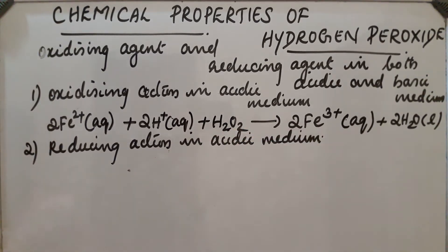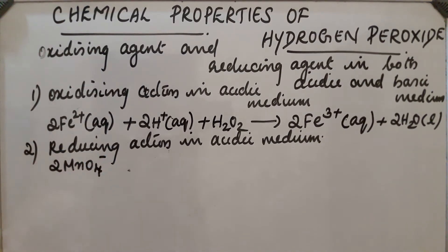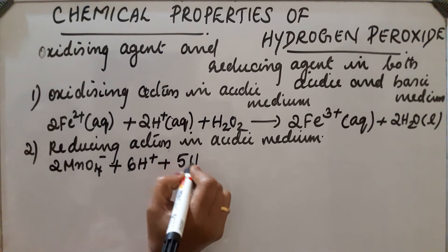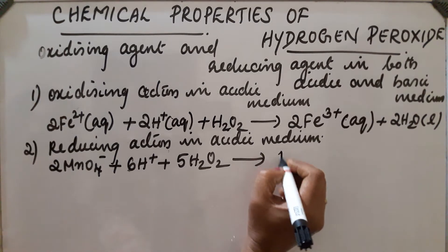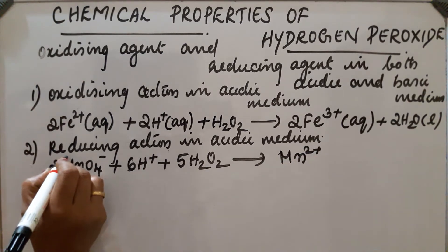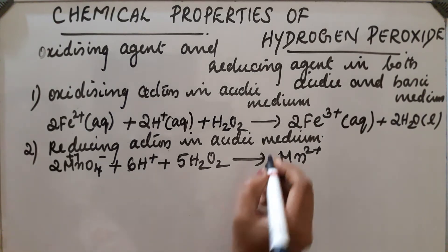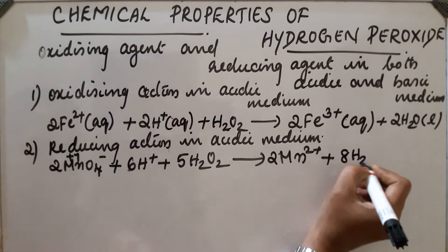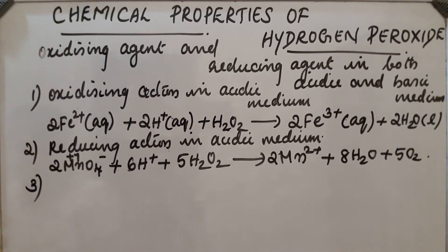Second case: reducing action in acidic medium. 2 MnO₄⁻ (permanganate ion) in acidic solution plus 5 H₂O₂. H₂O₂ reduces MnO₄⁻; Mn goes from +7 to +2, so reduction takes place. Products: 2 Mn²⁺ plus 8 H₂O plus 5 O₂.